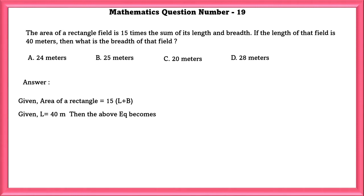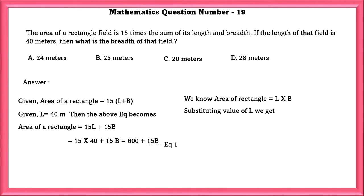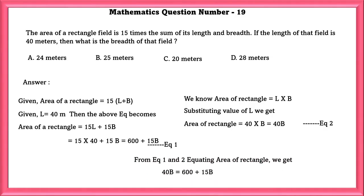Given area of the rectangle is equal to 15L plus 15B. Given length is equal to 40 meters, then the equation becomes area equals 15 into 40 plus 15B, which is equal to 600 plus 15B. That is equation 1. We know that area of a rectangle is equal to length into breadth. Substituting the value of L we get 40 into B, which is equal to 40B. That is equation 2. From equations 1 and 2, equating area of the rectangle, we get 40B is equal to 600 plus 15B. So B is equal to 24 meters.